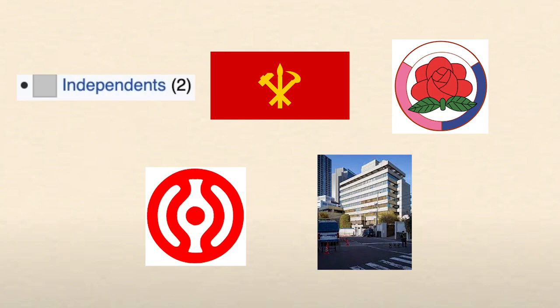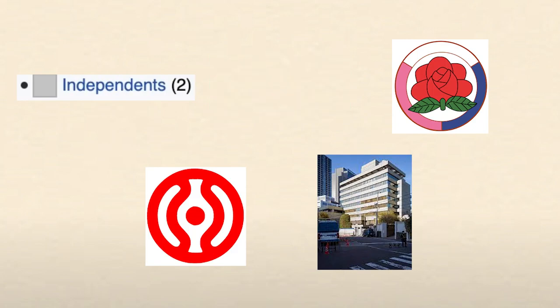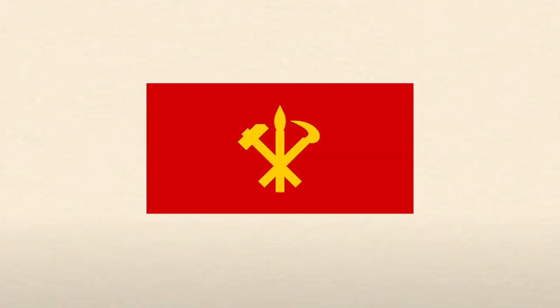Alright, so North Korea has five political parties and groups, and four of them only exist to make it look like the country is democratic, even though in practice these parties and groups are completely subservient and loyal to Kim Jong-un's party. That's it. Thanks for watching, I guess. Okay, fine — I'll go into more detail. There's obviously a little more to it than that.